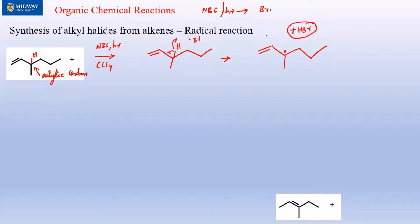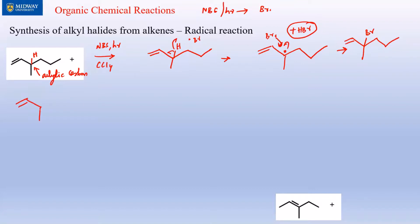HBr is one of the initial products. The carbon radical can now readily react with another Br•. We're drawing partial arrows here — this is not an art class. This gives us one of the products, and the cycle can continue.